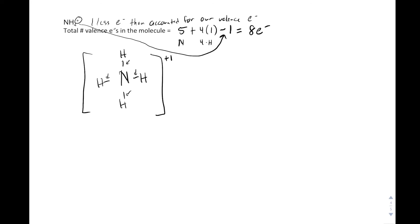We have eight electrons. Counting: two, four, six, eight. Nitrogen has an octet with eight electrons. One thing to note about hydrogen: since it only has the 1s orbital, it only needs two electrons to be stable. So hydrogen is satisfied with two electrons, and we have our stable NH4+ molecule with all bonds drawn out.